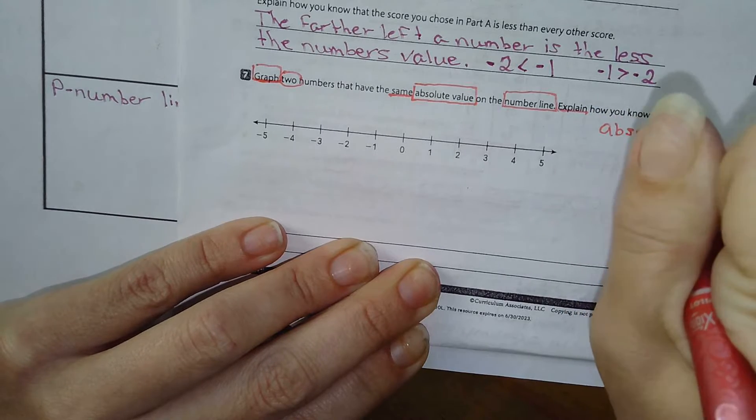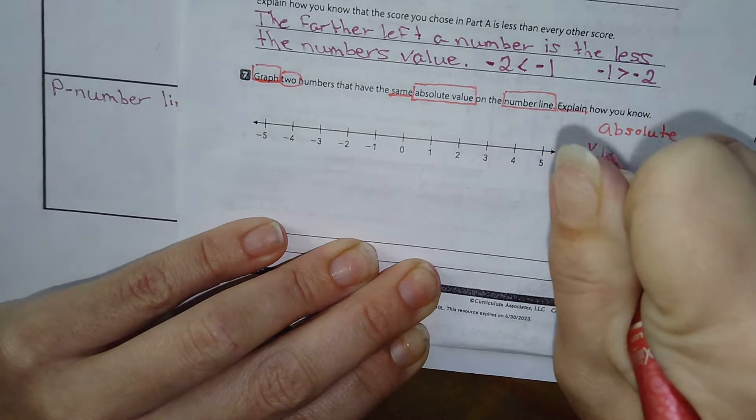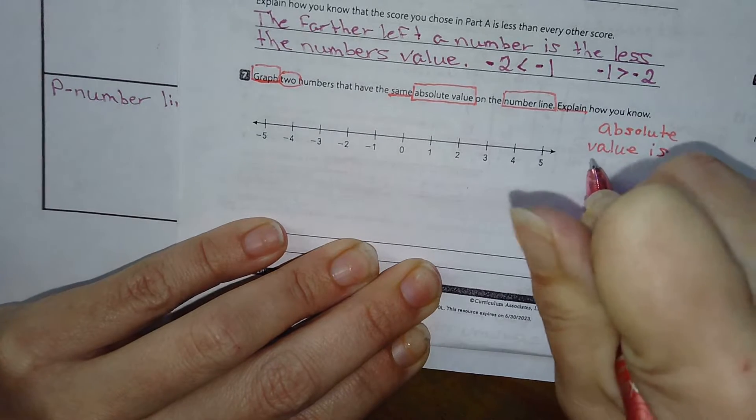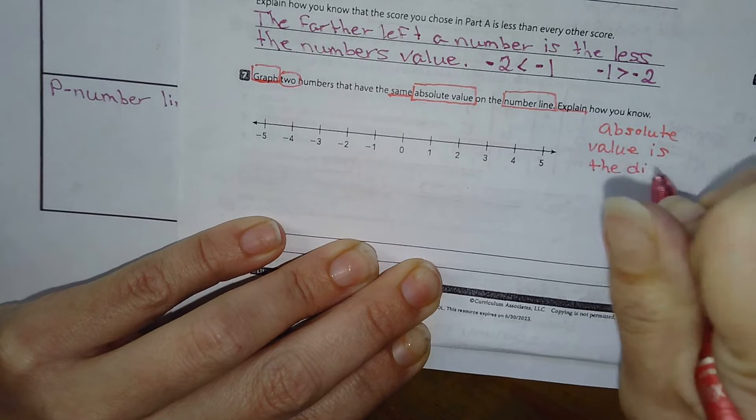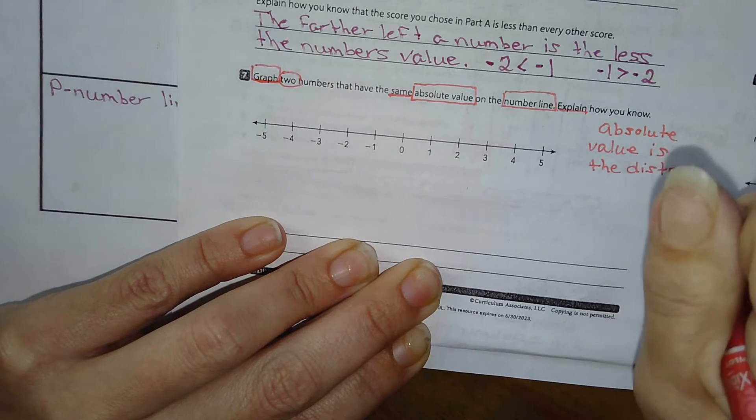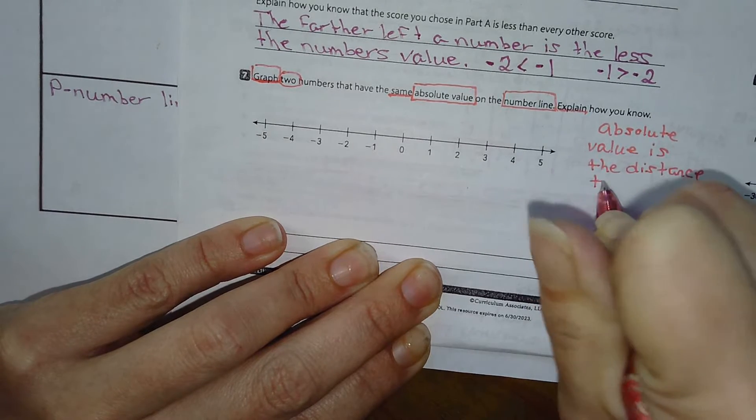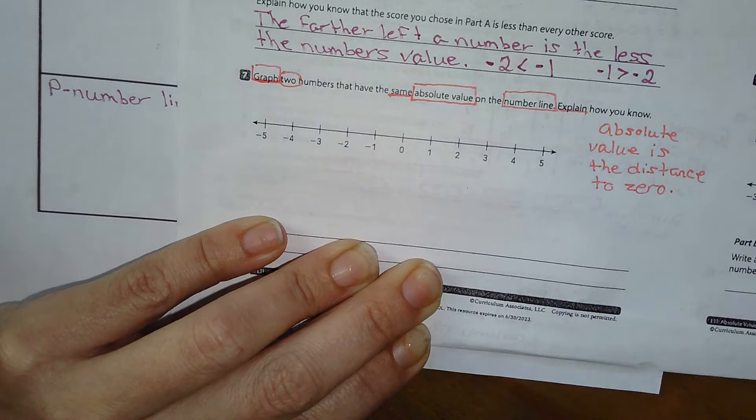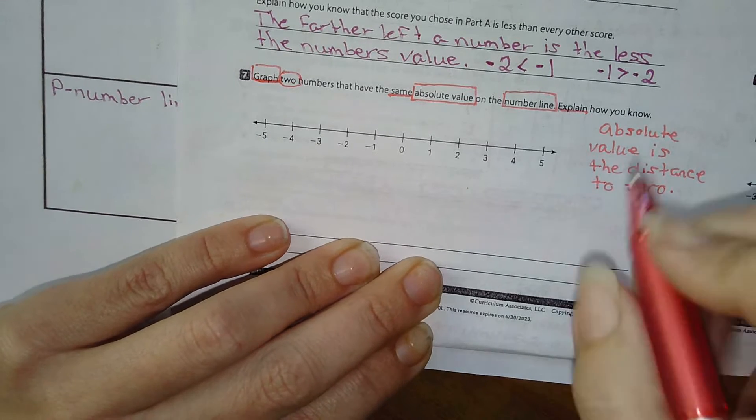Absolute value is the distance to zero, and it's always positive.